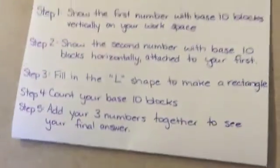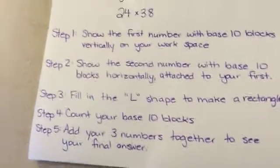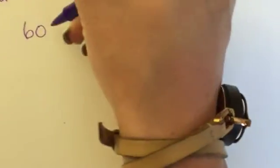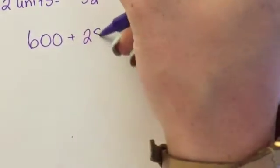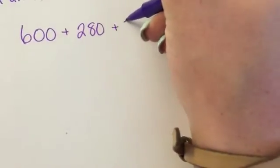Now, step 5 is to add my 3 numbers together to get my final answer. So I need to go 600 plus 280 plus 32.